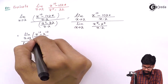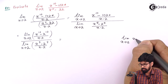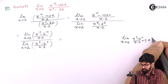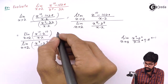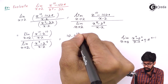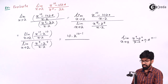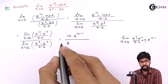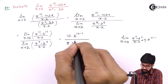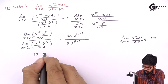Now we apply the formula: limit x tends to a of x raise to n minus a raise to n upon x minus a equals n times a raise to n minus 1. For the numerator, n equals 10 and a equals 2, giving 10 multiplied by 2 raise to 9. For the denominator, n equals 5 and a equals 2, giving 5 multiplied by 2 raise to 4.